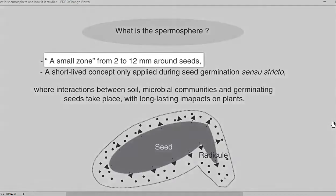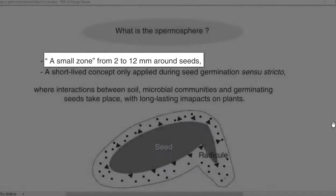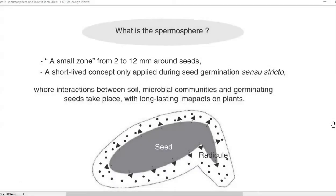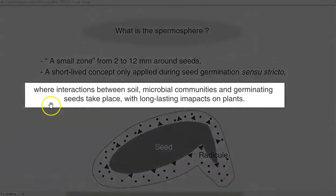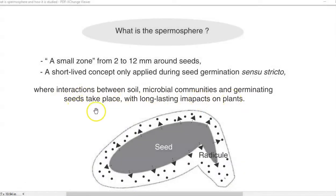The spermosphere refers to a small zone around the seeds. In an imbibed seed, it extends up to 2 to even 12 millimeter region from the seed. This particular region is a place where interaction between soil microbial communities and germinating seeds takes place, and this effect will have a long-lasting impact on the plant system.